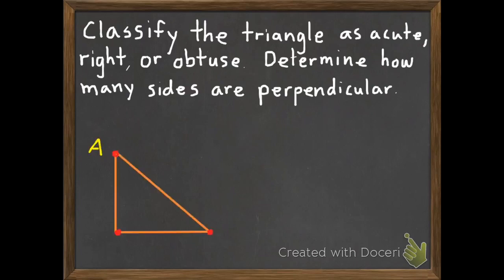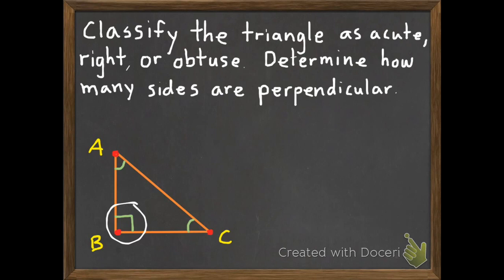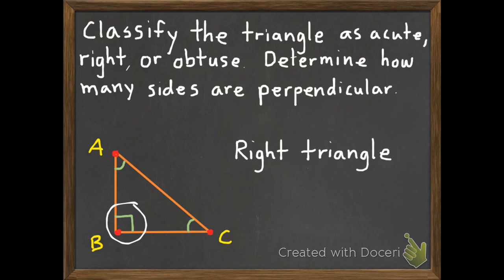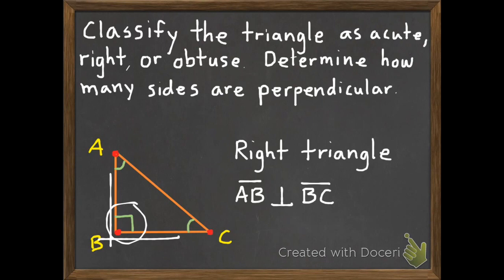Here's our first example. We need to figure out if this triangle is acute, right, or obtuse. Because of this square mark in the corner, I can tell this is a right angle. If we have one right angle, that makes it a right triangle. The second part of the instructions says to determine how many sides are perpendicular — how many of these sides make a right angle. We have two: line segment AB is perpendicular with line segment BC. So we have two perpendicular sides.